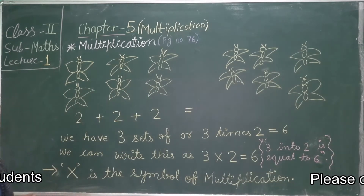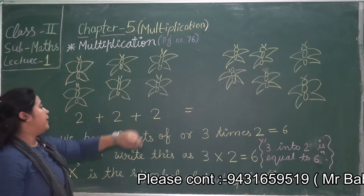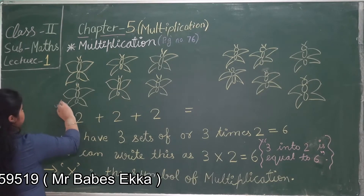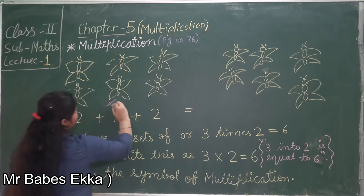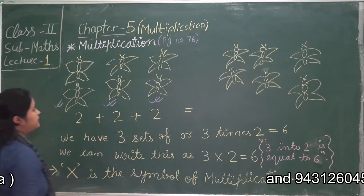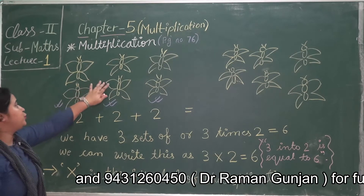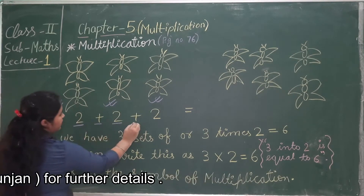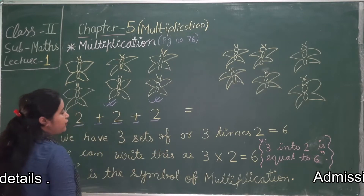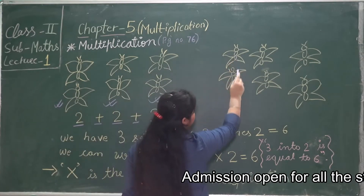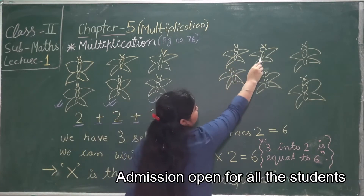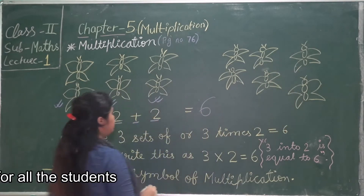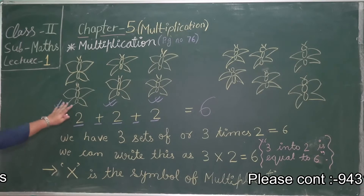You can see here we have three sets of butterflies. In each set we are having two butterflies. We have one set, two sets, and three sets of butterflies. We have written here: two plus two plus two is equal to — when you count, you get one, two, three, four, five, six — six butterflies.